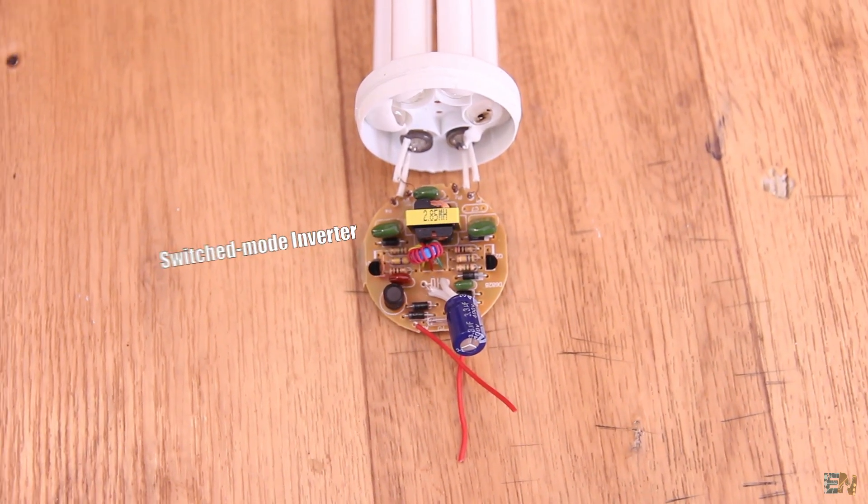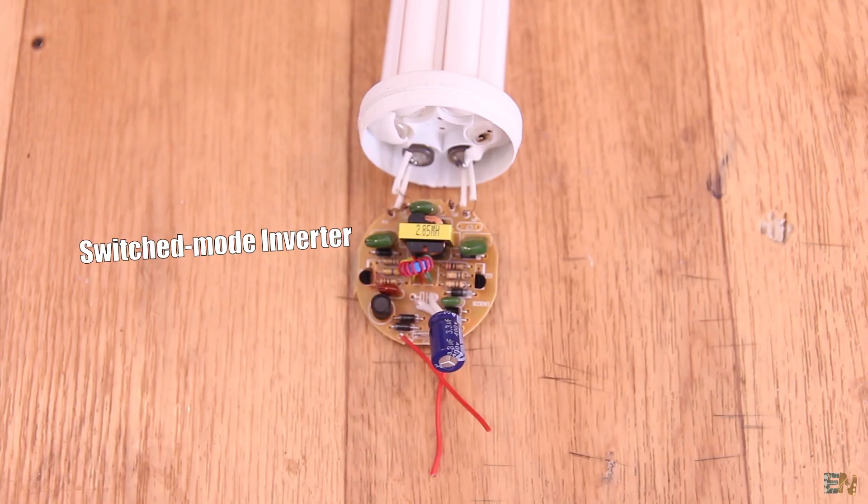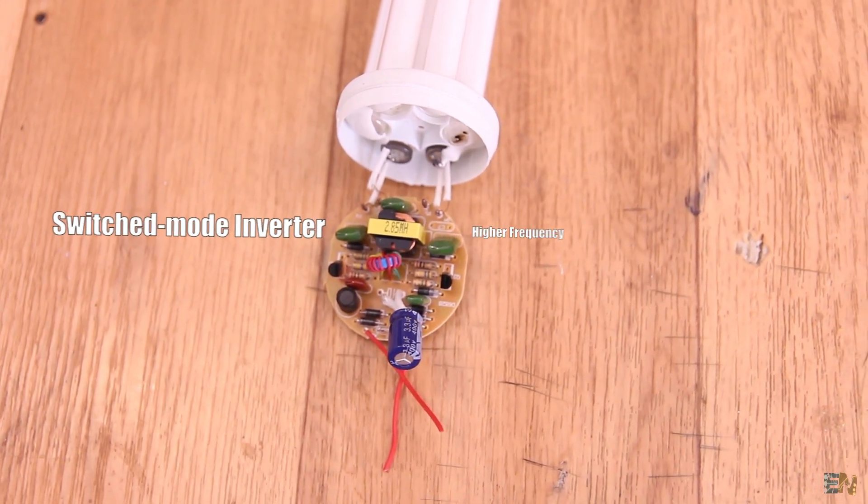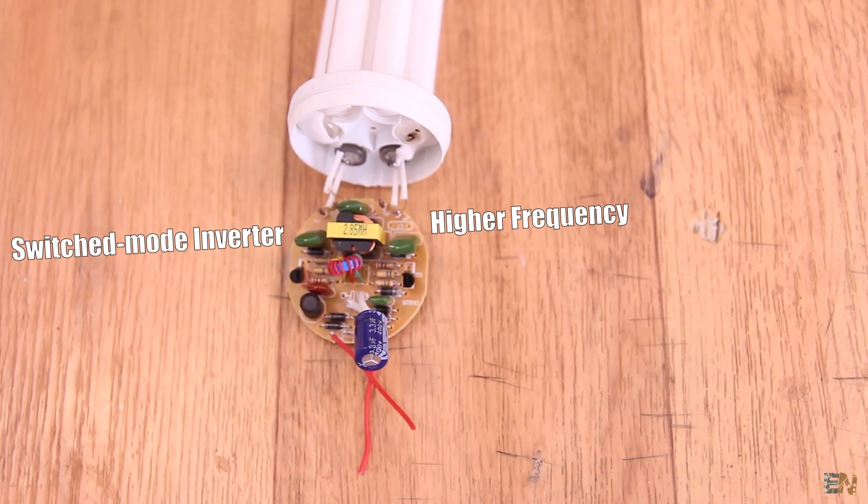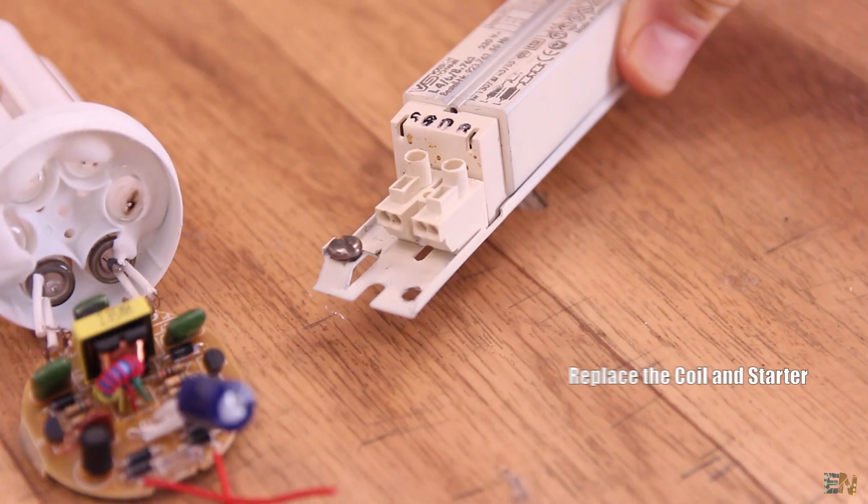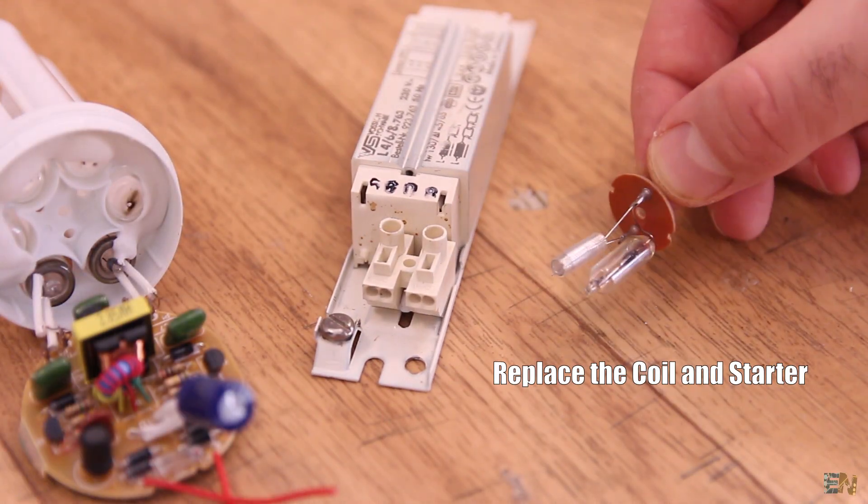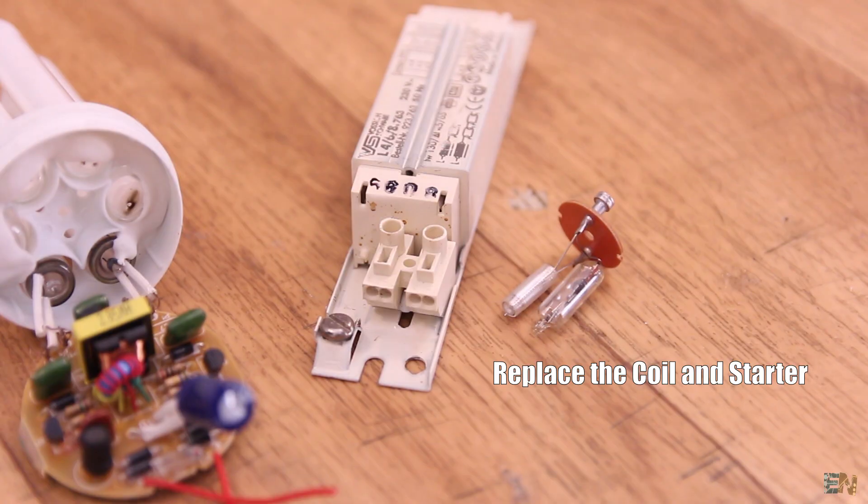The CFL light bulbs consist of a switch mode converter or electronic ballast that functions on a very high frequency and acts as a replacement for the electrical choke and the starter assembly that we had a few years back. So first, let's see a little bit of physics.